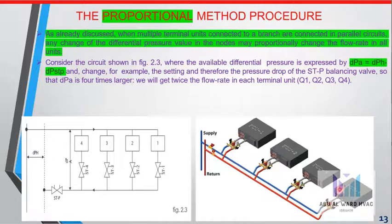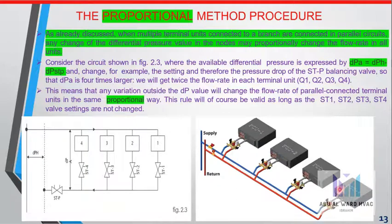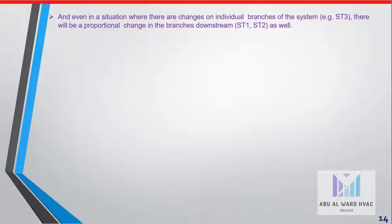If the DP_a is four times larger, we will get twice the flow rate in each terminal unit Q1, Q2, Q3. This means that any variation of the DP value will change the flow rate in parallel connected terminal units in the same proportional way. This rule will be valid as long as the valves remain set. Even in a situation where there are changes on individual branches of the system, like ST3, there will be a proportional change in the branches downstream ST1 and ST2 as well.